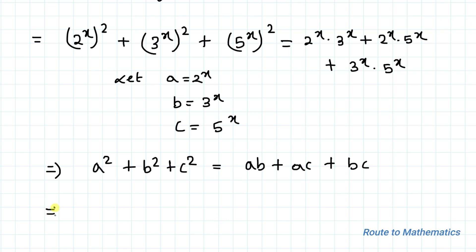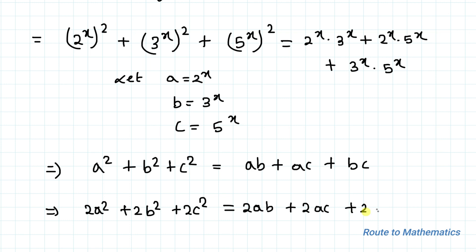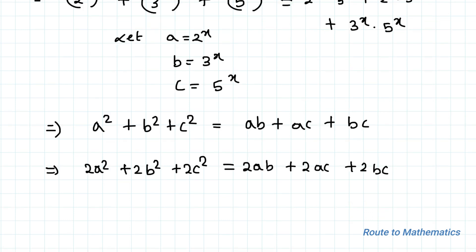In the next step I'll multiply both sides of the equation by 2, giving: 2a² + 2b² + 2c² = 2ab + 2ac + 2bc. Now I'll take all the terms from the right-hand side to the left-hand side. We have two terms of a², so I can split them and write one a² with each paired term.